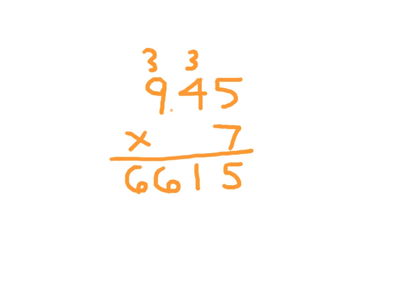2 decimal places. 2 decimal places for my answer as well. Again, thinking of this for our check for decimal place, 9 times 7 is 63. Yep, answer is reasonable.